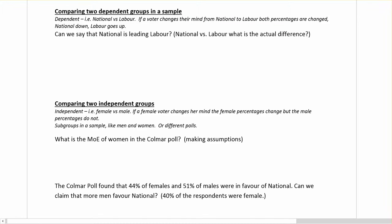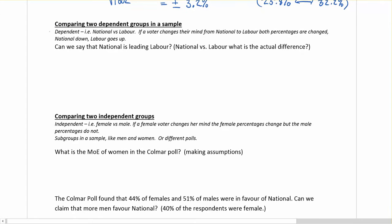The next margin of error we're going to look at in terms of types of calculations is when you're comparing two dependent groups in a sample. What I mean by dependent groups here is something like a question national versus labour, if you want to know who's leading. If a voter changes their mind from national to labour, both of the percentages are going to be changed. National will go down, labour will go up, so it's a dependent situation here.